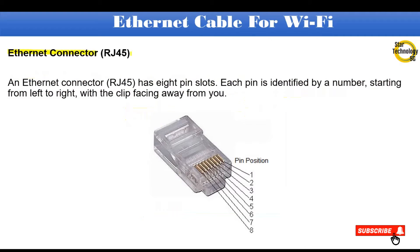Ethernet connector RJ45. An Ethernet connector, RJ45, has eight pin slots. Each pin is identified by a number, starting from left to right, with the clip facing away from you. The pins are numbered: first pin, second pin, third pin, fourth pin, fifth pin, sixth pin, seventh pin, and eighth pin.